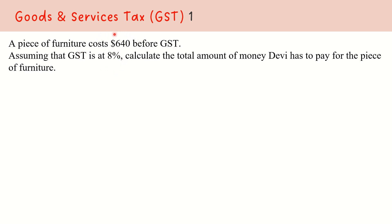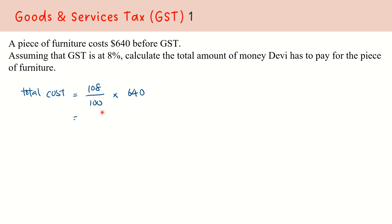The original price of $640 before GST is actually 100%. And with the GST on top of it, that makes up a total of 108%. So the total amount of money Devi has to pay represents 108%. Therefore, to find out what is the total cost, we take 108 over 100 times $640, and we get $691.20.